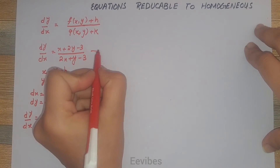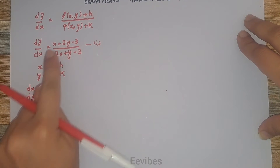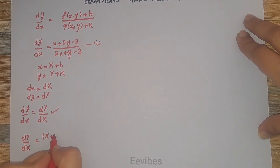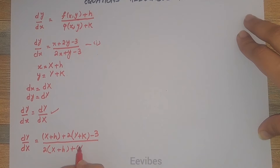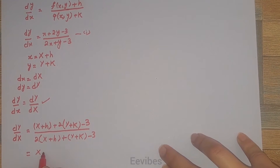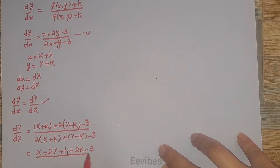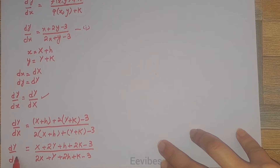Let's start making substitutions in equation 1. dy/dx equals dY/dX. Substituting X + h in place of x and Y + k in place of y, the numerator becomes (X + h) + 2(Y + k) − 3 and the denominator becomes 2(X + h) + (Y + k) − 3. On simplification this gives (X + 2Y + h + 2k − 3) / (2X + Y + h + k − 3).